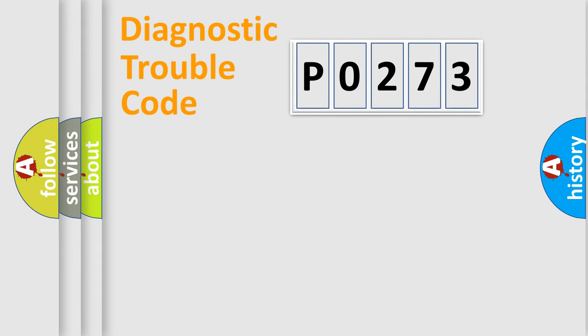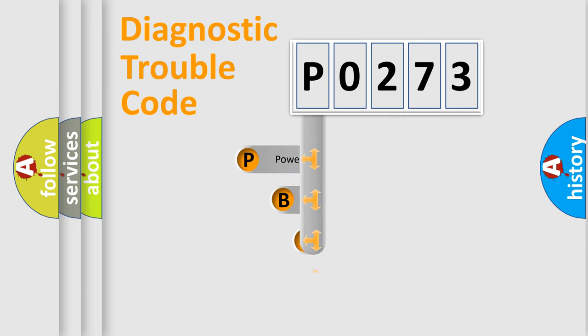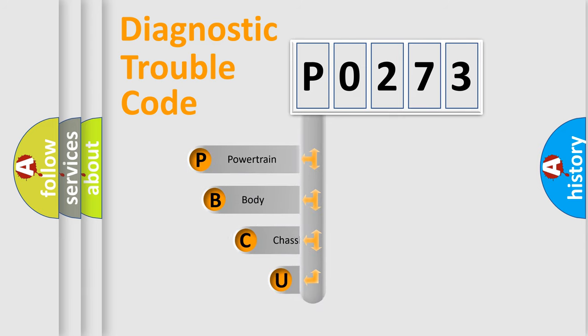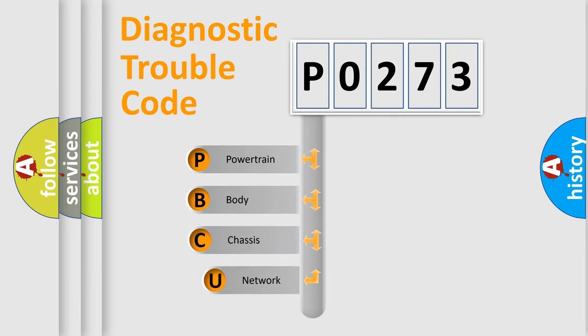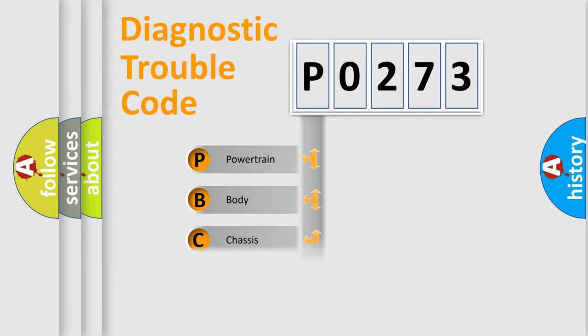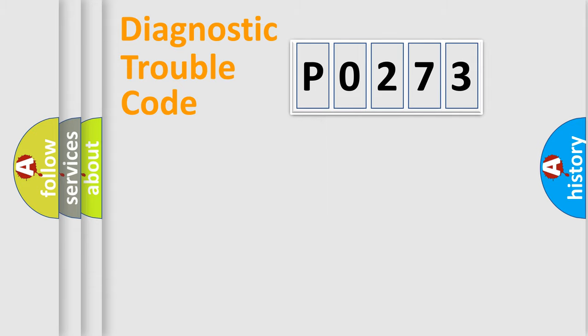Let's do this. First, let's look at the history of diagnostic fault code composition according to the OBD2 protocol, which is unified for all automakers since 2000. We divide the electric system of automobile into four basic units: Powertrain, Body, Chassis, and Network.